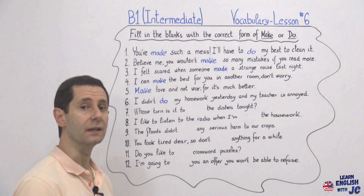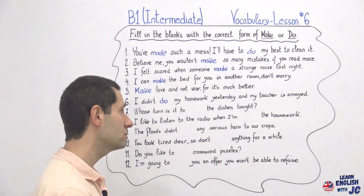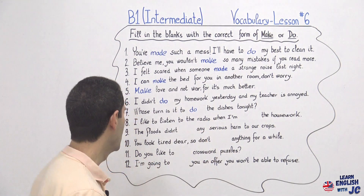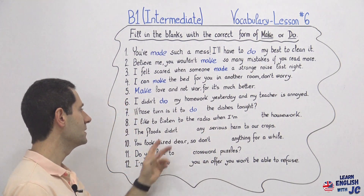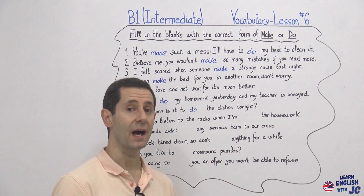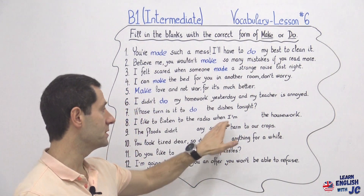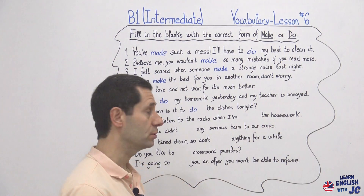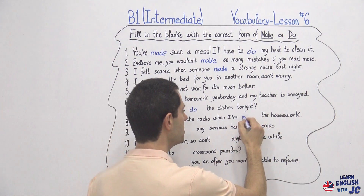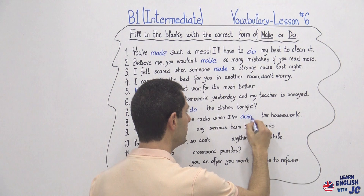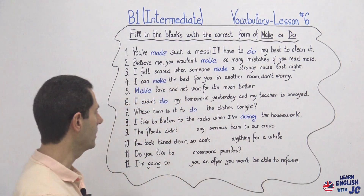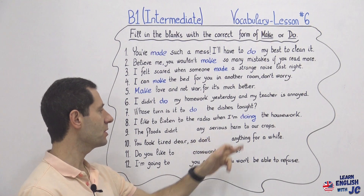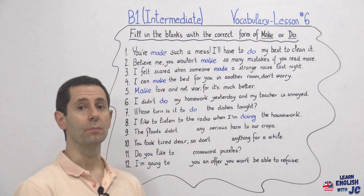Number seven: 'Whose turn is it to do the dishes tonight?' With 'the dishes,' you use do. Number eight: 'I like to listen to the radio when I'm doing the housework.' This is present continuous and with 'housework' you use do, so you use the gerund form — 'while I'm doing the housework.'